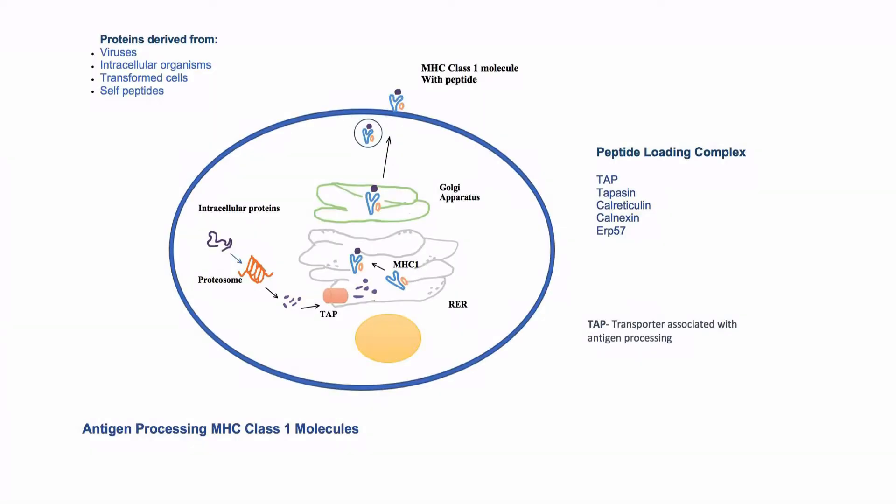HLA class 1 molecules present peptides derived from proteins that are present in the cytoplasm of the cell. These proteins can be derived from viruses, other intracellular pathogens, abnormal proteins, or even normal proteins that are not in use.